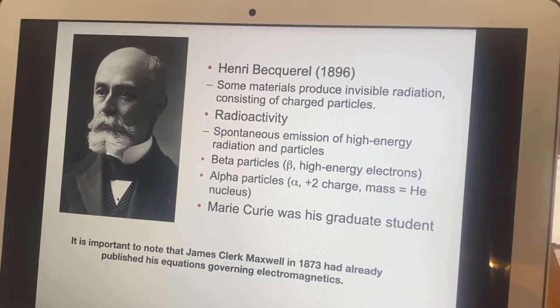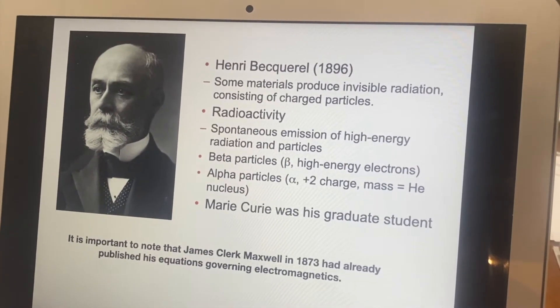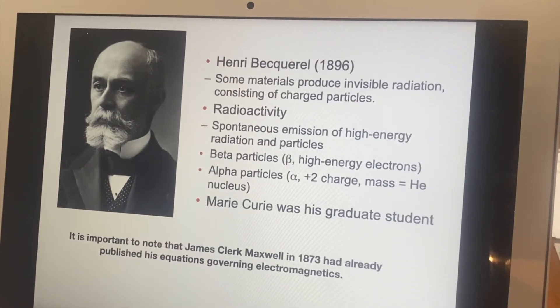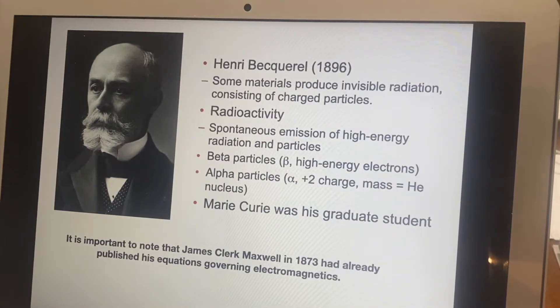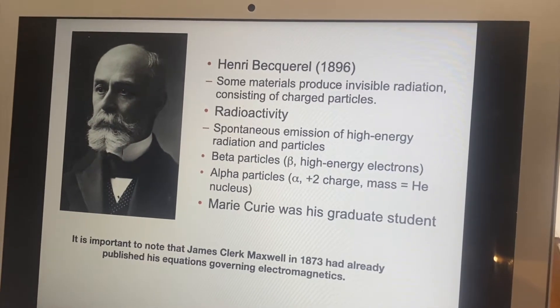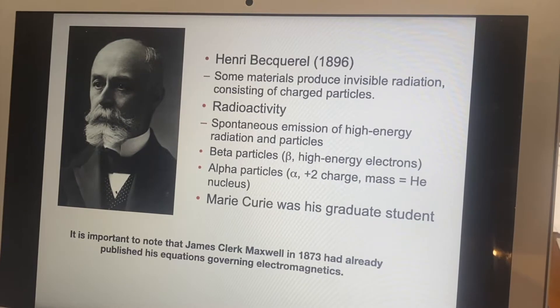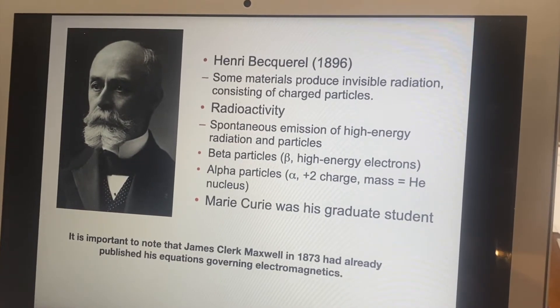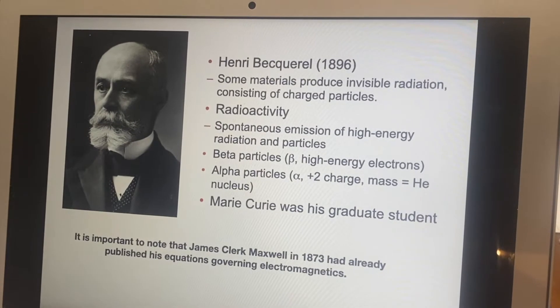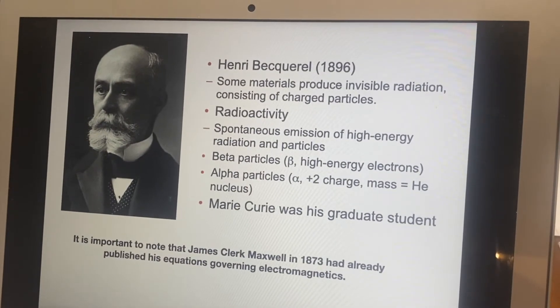And alpha particles, which turn out to be a helium nucleus, they're a lot heavier, and they have a plus two charge instead of a negative one charge like the electrons, the beta particles. A very interesting thing about him is that Marie Curie was his graduate student, and she ended up getting a Nobel Prize for her work on radiation.